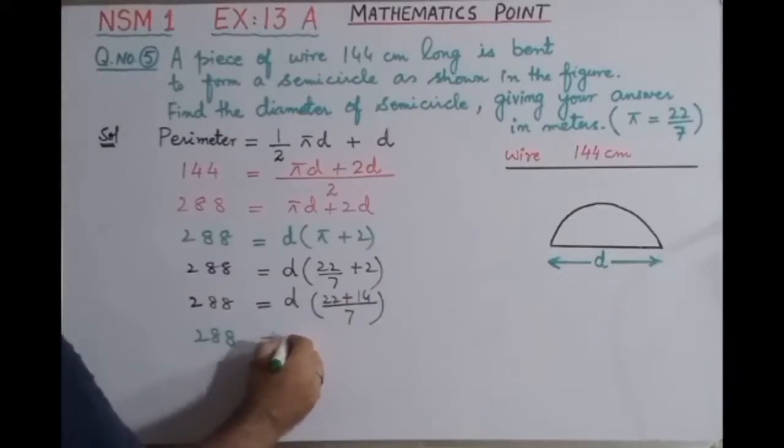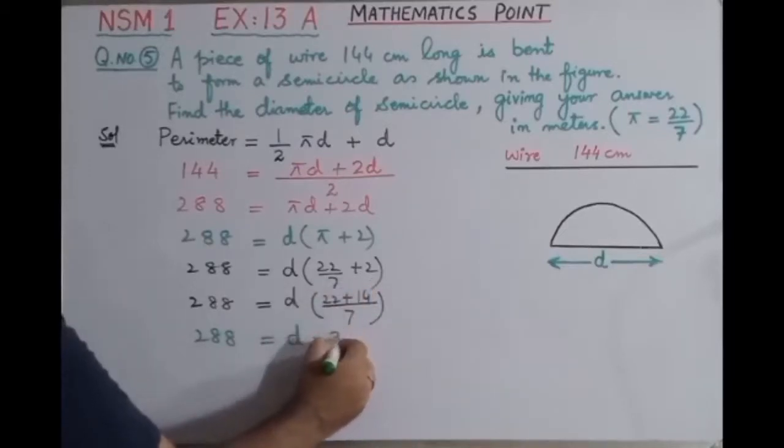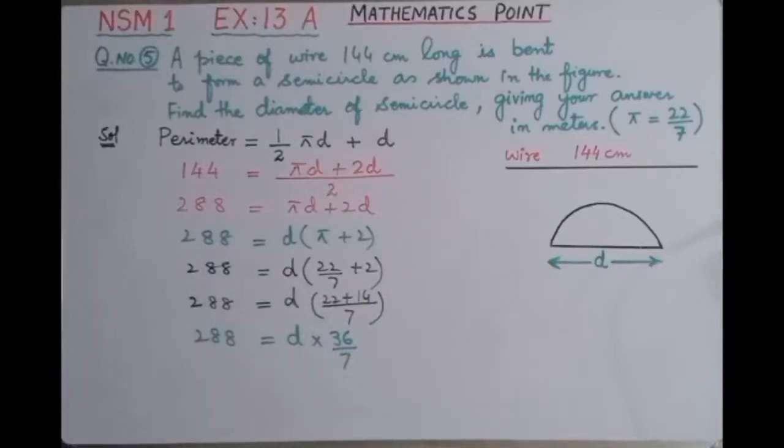288 as it is, d into 22 plus 14 is 36, 36 by 7. In the next step we have to find out the value of d. We multiply 7 with 288 and divide by 36, so we can write it as d equals 288 by 36.